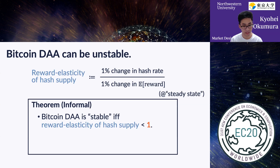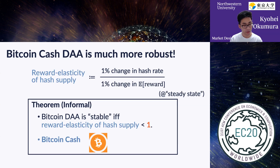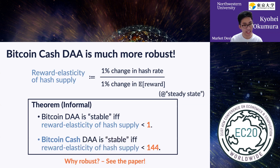This result says Bitcoin DAA is problematic. However, there are many other blockchains in the world, and we found that some of them use much better DAAs. Bitcoin Cash is another blockchain system — a kind of spin-off of Bitcoin. We proved that its DAA is stable as long as the elasticity is less than some large number, a condition that is almost always satisfied in reality.